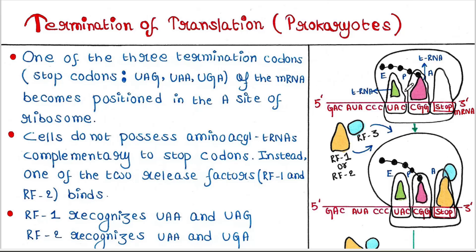Once the ribosome moves along the entire mRNA and reaches one of these three stop codons, it is time to stop translation. We already know that the ribosome has three pockets: E, P, and A. The stop codon fits into the A site. The P site contains the tRNA along with the polypeptide chain, and the E site contains an uncharged tRNA.